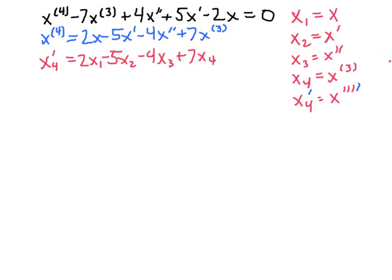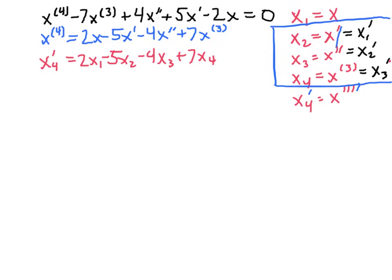Our goal is to turn the original fourth order equation into a system of first order differential equations. Going back to our variable definitions: x sub 2 is x prime, but x is really x1, so x sub 2 equals x1 prime. Then x sub 3 is the second derivative, which is the first derivative of the first derivative, or x2 prime. And x sub 4 is x3 prime. So we now have three more first order differential equations in the variables x1, x2, x3, and x4.